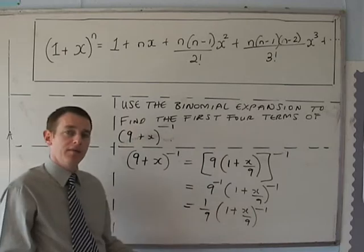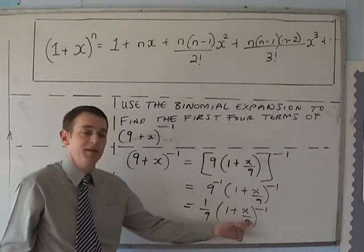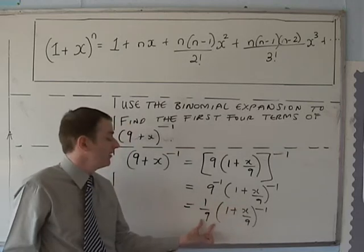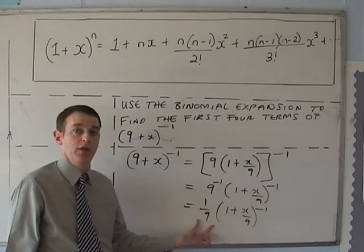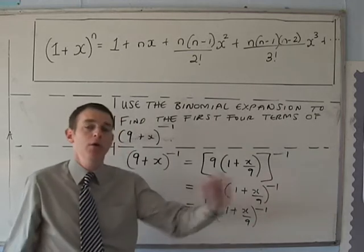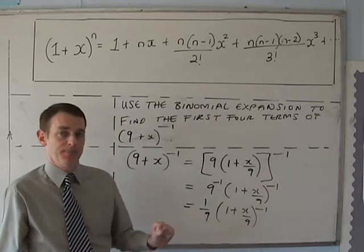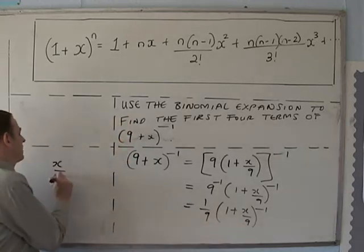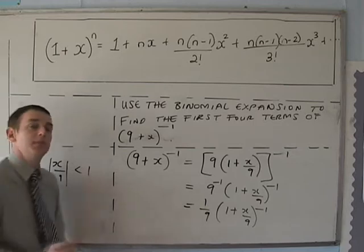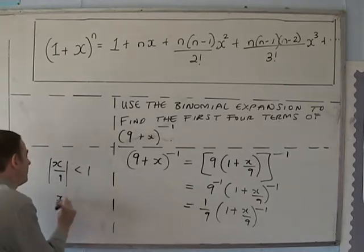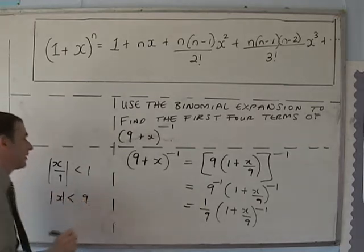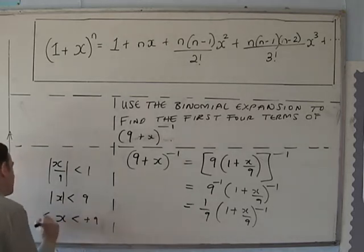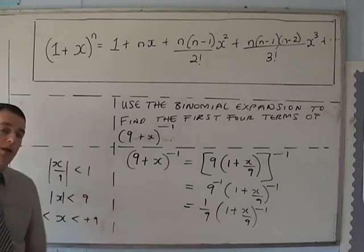So once you've got it in the right form with 1 plus something, you work it out exactly as you would normally, and then at the end multiply all by one ninth. What values is this valid for? The modulus of x/9 must be smaller than 1, which is the same as saying x is smaller than +9 and bigger than −9.